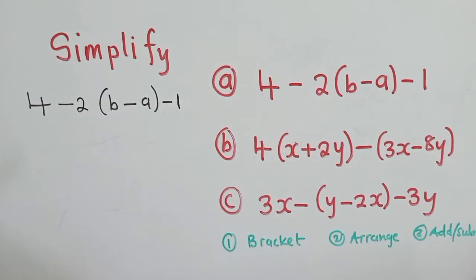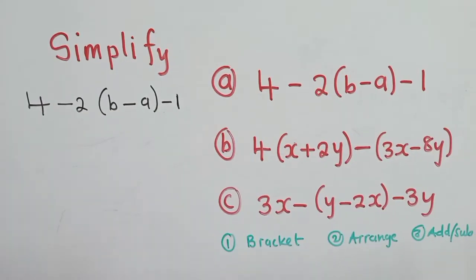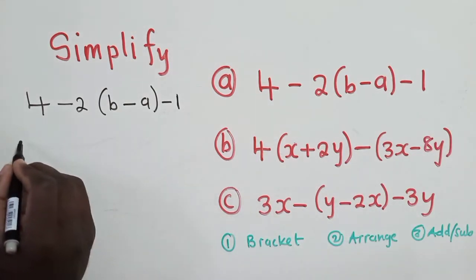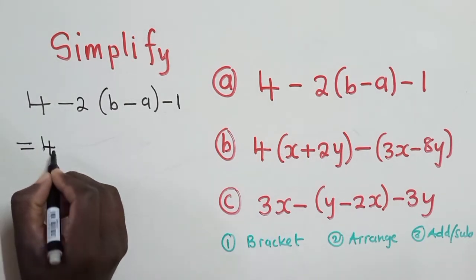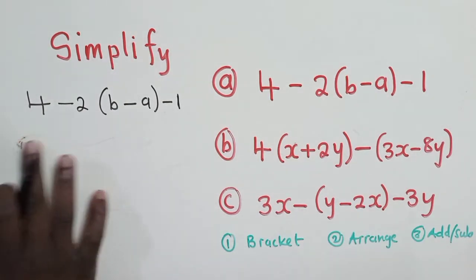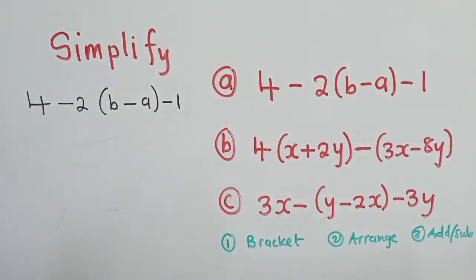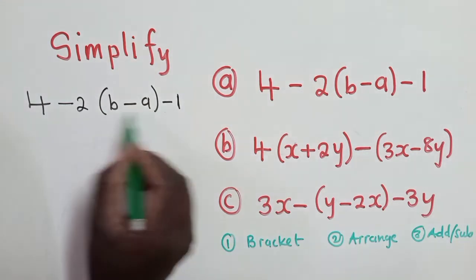So these are the 3 rules that we need to apply in order for us to answer this. So we're going to say equal to, we have a 4 there. Or before we write this, let's understand one thing. So when we say get rid of the brackets, we need to remove these brackets.